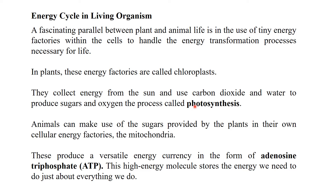The glucose produced during photosynthesis is used by different living organisms as a source of energy. The oxygen produced is used in aerobic respiration. Animals use the glucose produced by plants; they intake this glucose and through aerobic respiration in the mitochondria, this glucose molecule is converted to produce the energy compound called ATP.